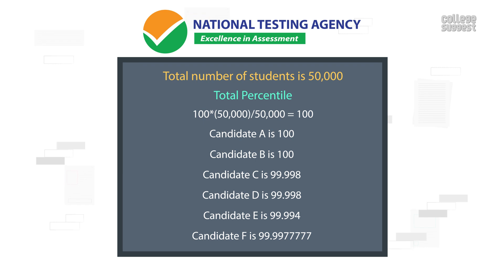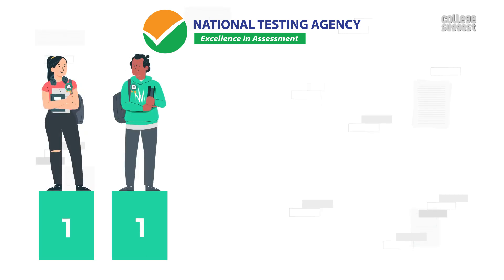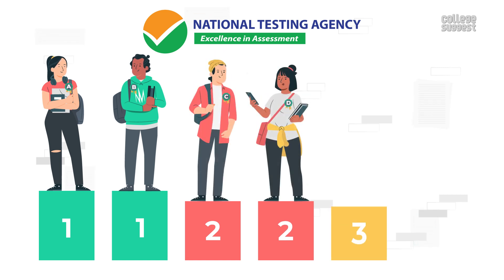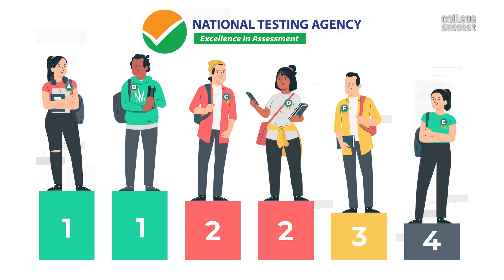Remember, percentile scores will be calculated up to 7 decimal places to avoid ties among candidates with the same scores. Based on the percentile, the candidates will get the following ranks: rank 1 to candidates A and B, rank 2 to candidates C and D, rank 3 to candidate F, and rank 4 to candidate E. This is how NTA calculates percentile scores and ranks.